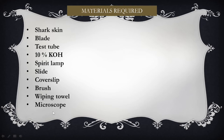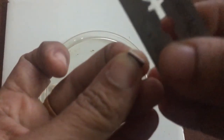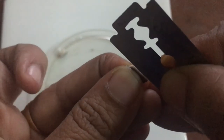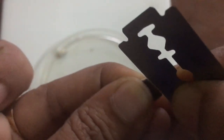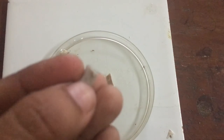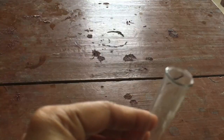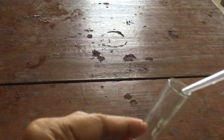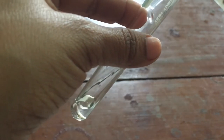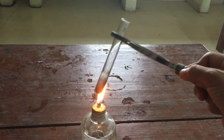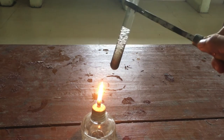Let's start the practical. First, we have taken a small piece of shark dorsal skin and removed the excess fat present under the skin. Now we are placing it in a test tube and pouring a sufficient amount of 10% KOH — enough to completely submerge the skin. Then we heat it using a spirit lamp.